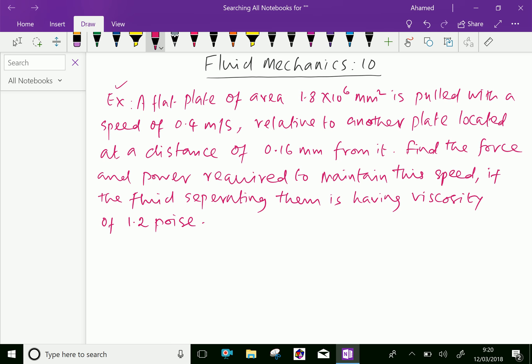Example: A flat plate of area 1.8 into 10 to the power of 6 mm square is pulled with a speed of 0.4 meter per second relative to another plate located at a distance of 0.16 mm from it. Find the force and power required to maintain the speed if the fluid separating them is having viscosity of 1.2 poise.